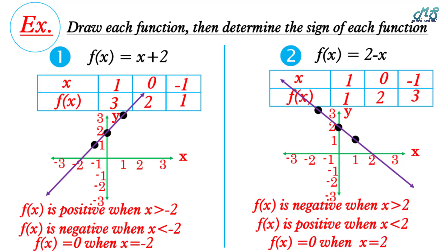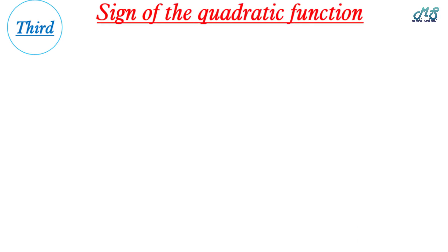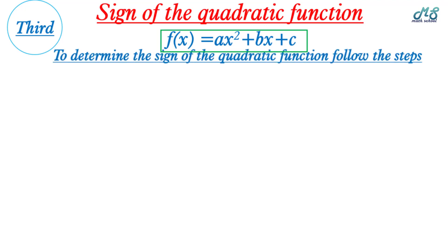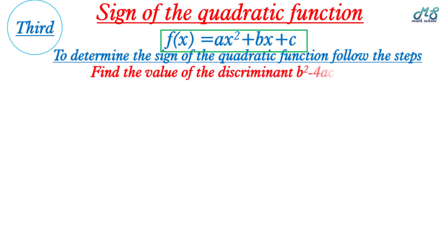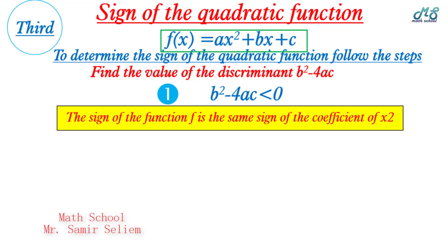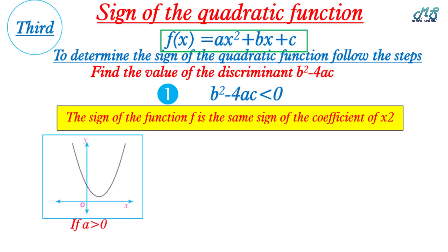Third, the sign of the quadratic function. The quadratic function is f(x) = ax² + bx + c. To determine its sign, follow the steps — we have three conditions. First, find the value of the discriminant: Δ = b² - 4ac. First condition: if b² - 4ac < 0, the sign of the function f is the same as the sign of the coefficient of x squared. The curve opens upward when a > 0.